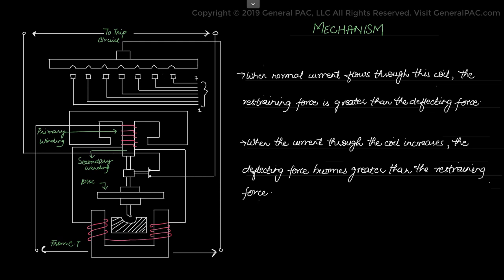That means the restraining force is greater than the deflecting force. But the current through the coil increases and after a certain level of current, the deflecting force becomes greater than the restraining force. As a result, the moving element starts changing the contact position in the relay. The trip circuit operates the circuit breaker which isolates the fault.